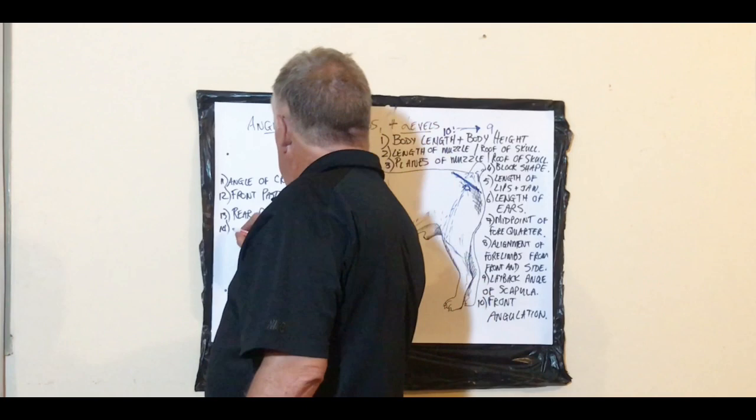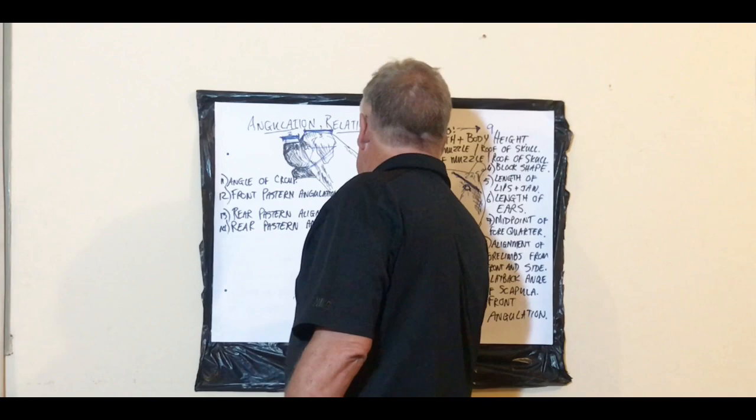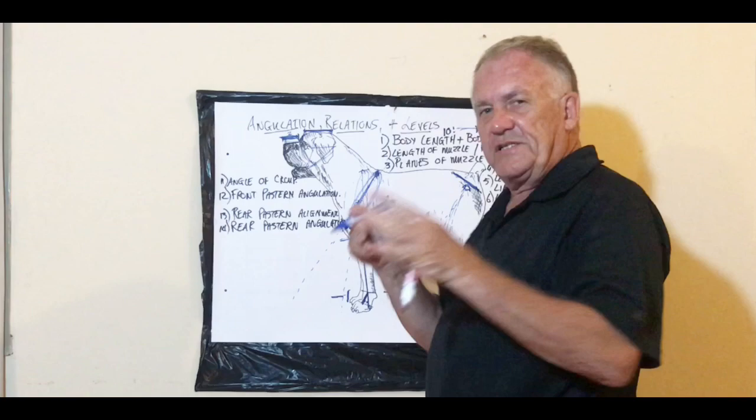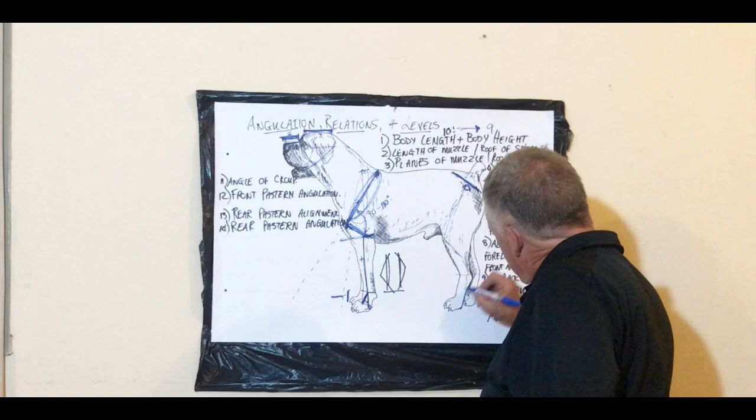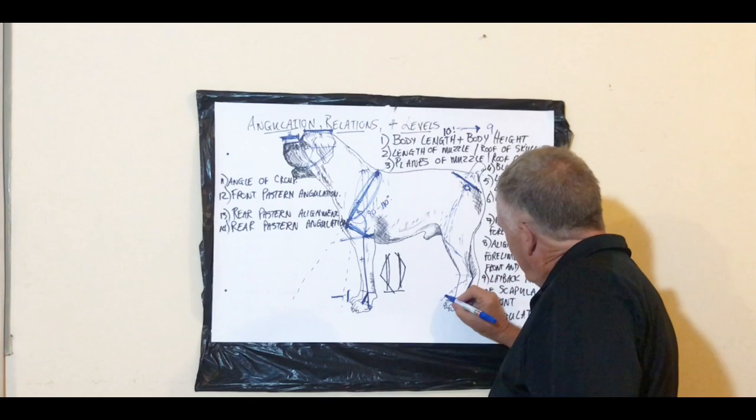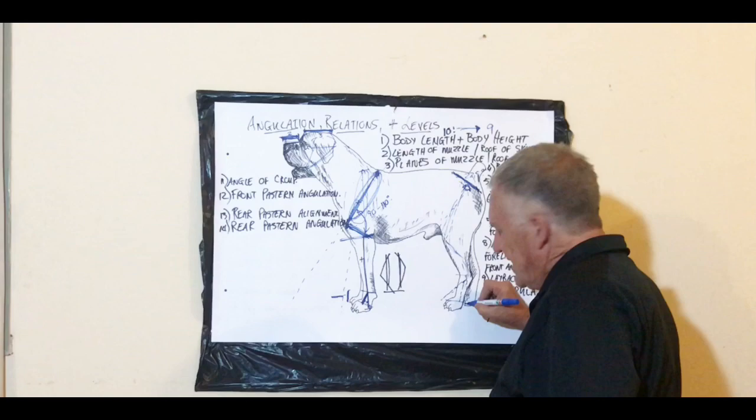Angle 14 is rear pastern angulation — this covers cow hocks and sickle hocks. The rear pastern is much longer than the front pastern. How does it fit onto the rest of the rear leg? Does it go at a sharp angle, slightly angled, or absolutely straight? These are terms we will handle later when we look at the rear hindquarter of the dog in detail.